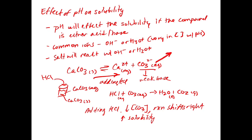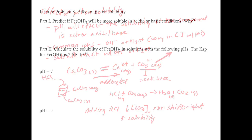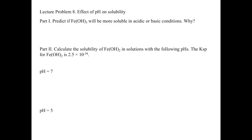In all honesty, calculating the solubility for calcium carbonate would be relatively complicated. Instead, we're going to look at a simpler example where we have a direct common ion effect — where the pH changes the concentration of hydroxide, which is directly related to the solubility of a hydroxide salt. In this problem, we're going to look at what happens to the solubility of iron hydroxide as we change the pH.